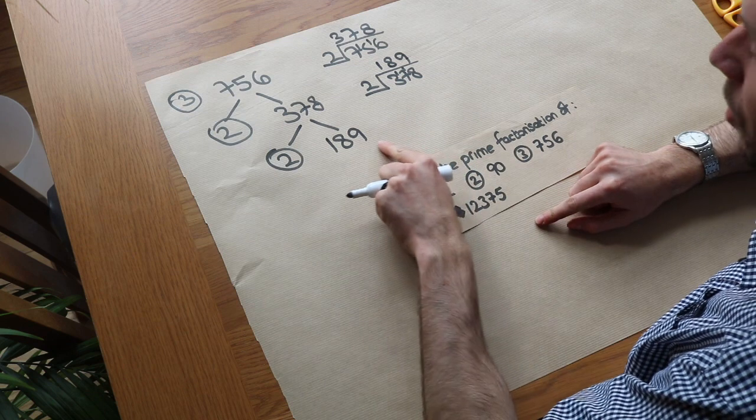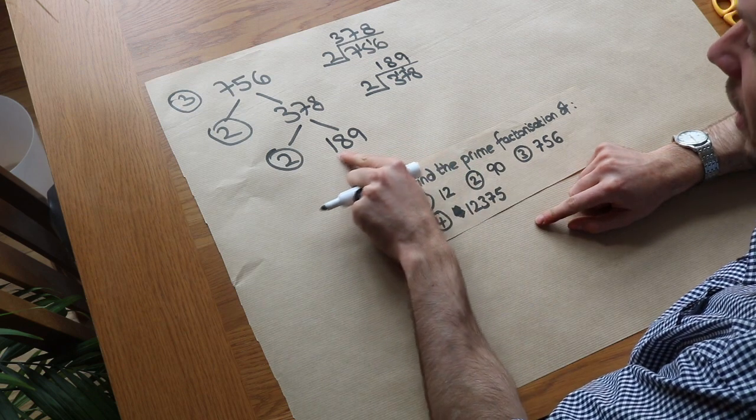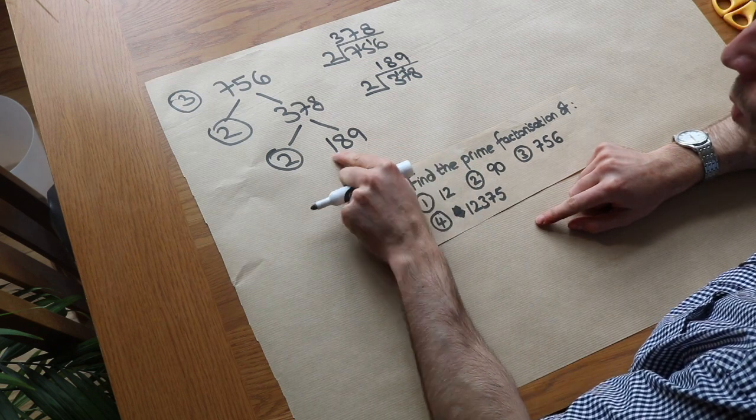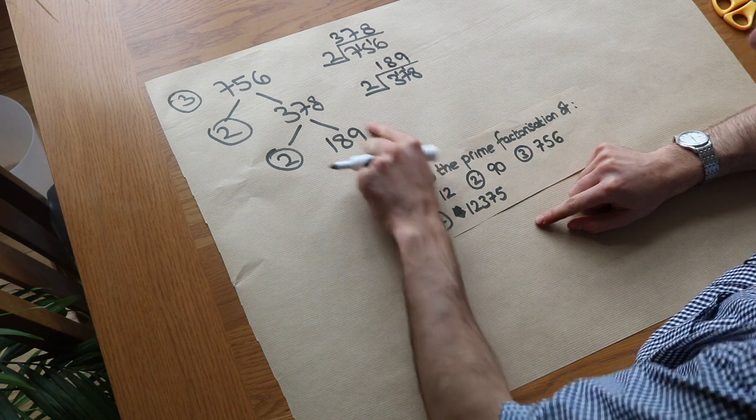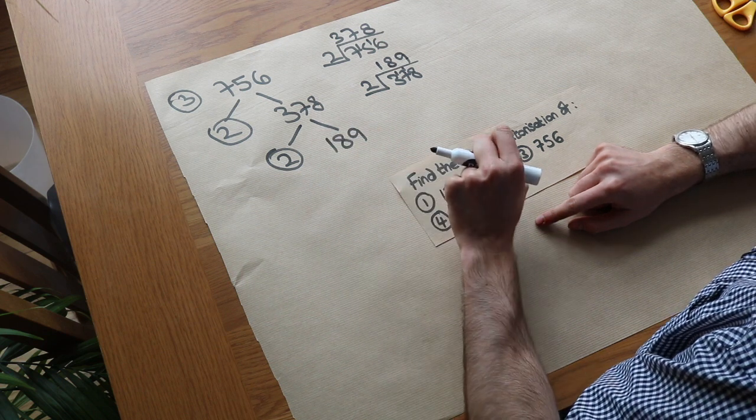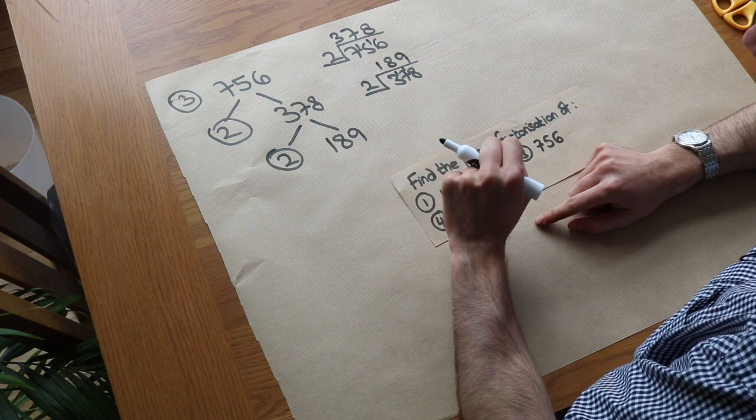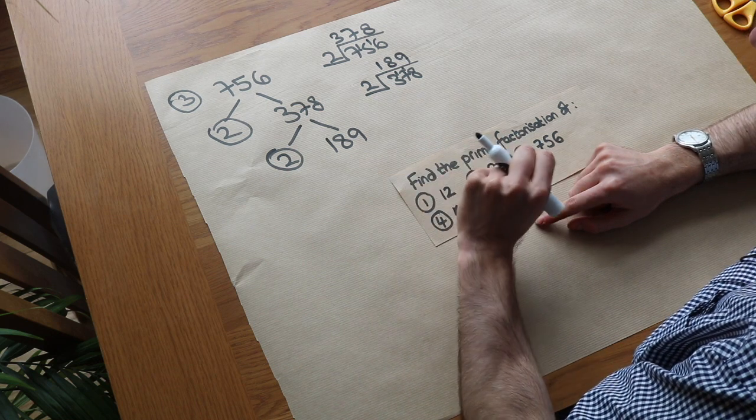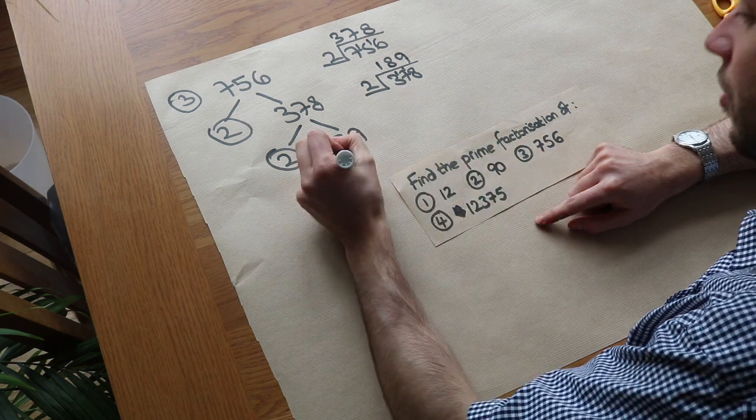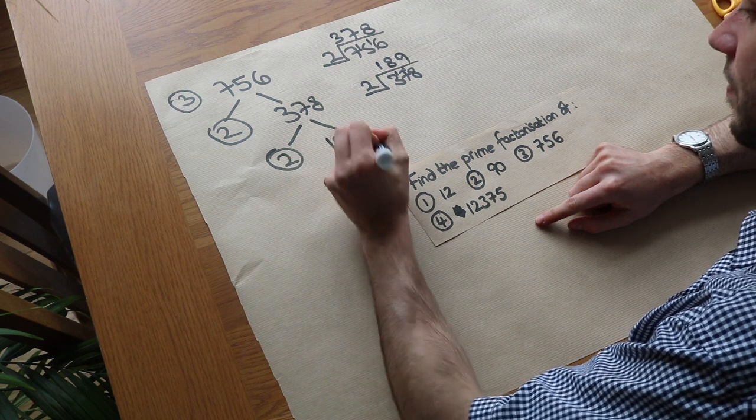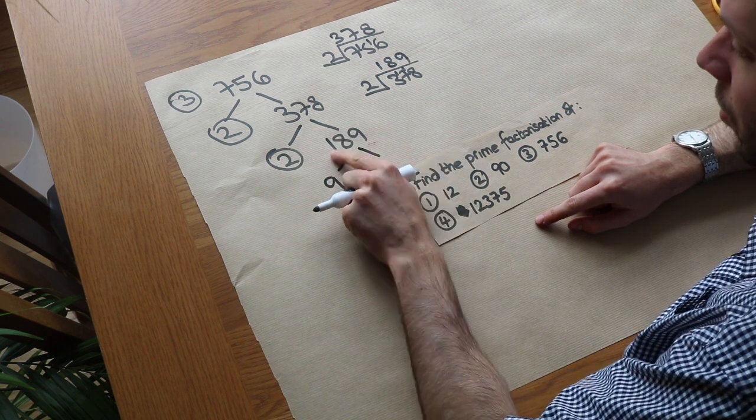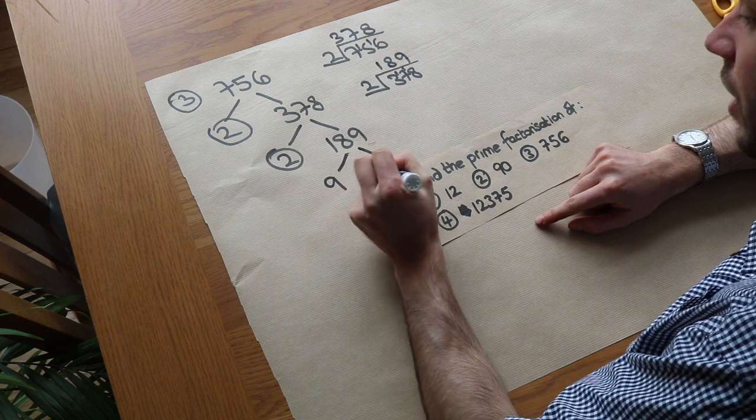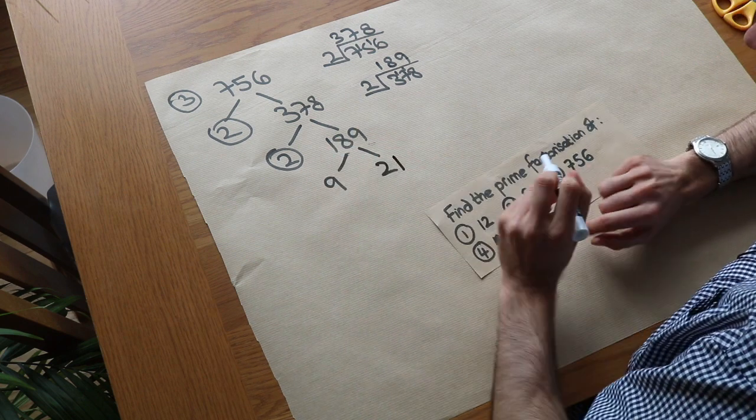And now I can spot that this is divisible by 9, because the digits add up to 9. 1 plus 8 plus 9 is 18. That's a multiple of 9. Now if the digits add up to a multiple of 9, then the number itself divides by 9. You may want to look at my video on divisibility rules. So we know that 9 goes into it. And then if we divide this by 9, well, 18 divided by 9 is 2, and 9 divided by 9 is 1. So it's 21.